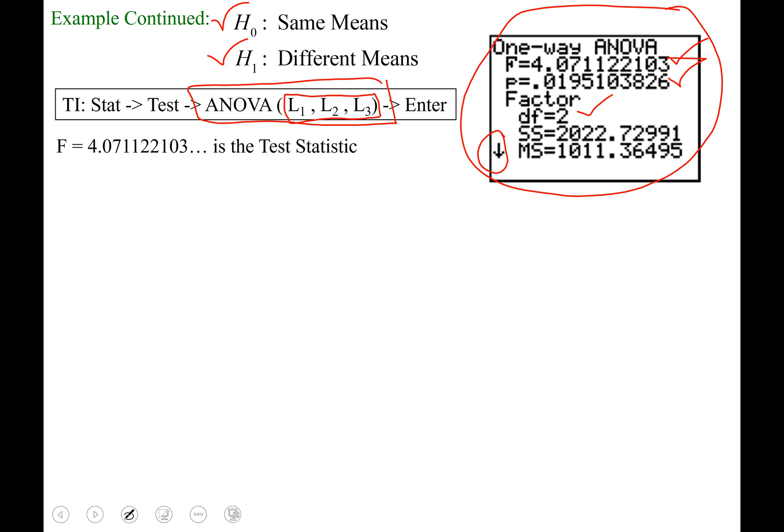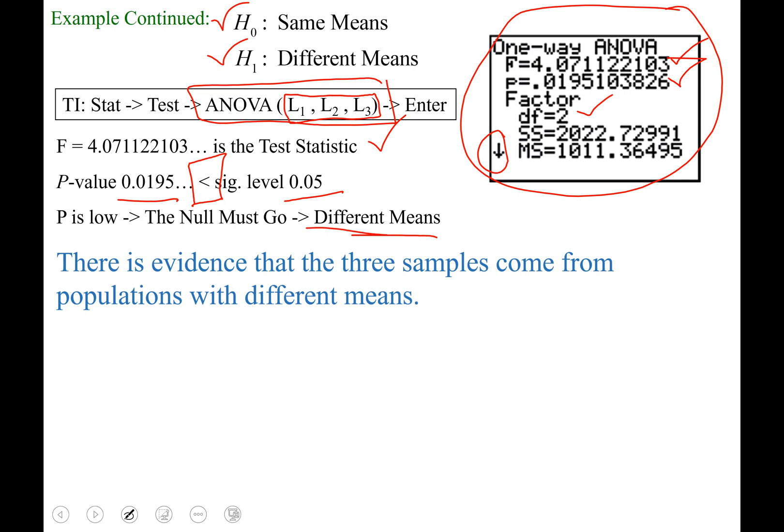So we're going to write down our test statistic. F equals. We have our p-value, which we always compare to the significance level. By compare, I mean fill in that little square that I just drew. And it turns out that p is lower than the significance level, which makes sense, because 0.0195 is smaller than our significance level of 0.05. So p is low. And here's that little rhyme. If p is low, the null must go. And if you look at the summary on the last slide, that means we are going to say that at least one of the population means is different than the others. So different means.